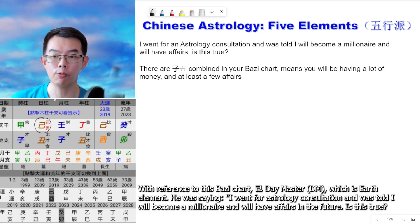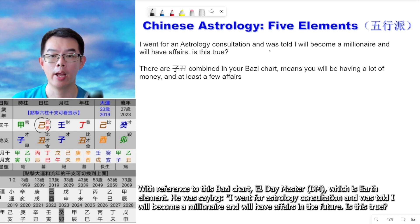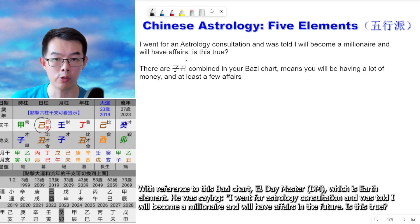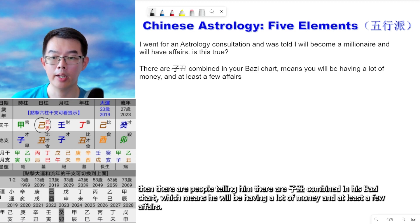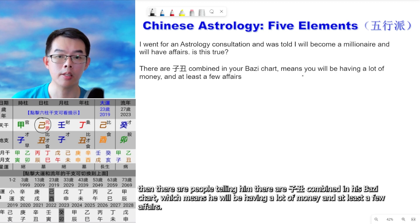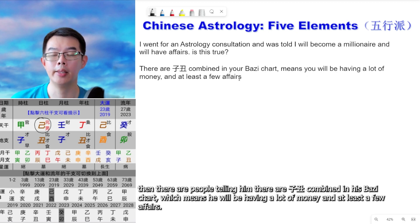He was saying: I went for an astrology consultation and was told I will become a millionaire and will have affairs in the future. Is this true? There are people telling him there are zi-chou combinations in his Ba Zi chart, which means he will be having a lot of money and at least a few affairs.